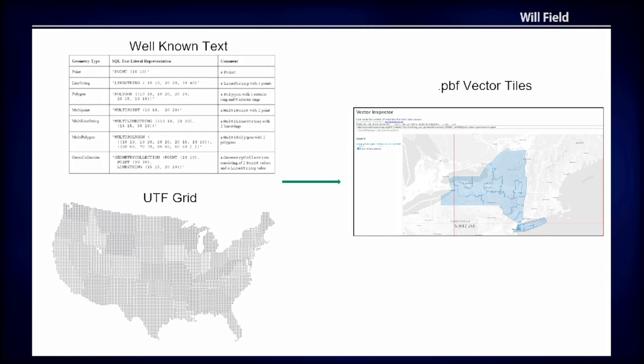So we had to serve well-known text and then convert it, and also use a UTF grid — which is very clever but seems very outdated, since this was already 2020. Our new stack uses vector tiles instead, and those tiles are served from PostGIS instead of Microsoft SQL.